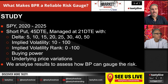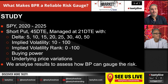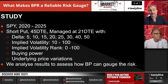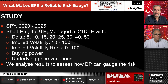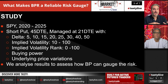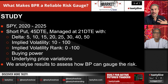The study we're looking at covers the last five years — SPY from 2020 to 2025. We're looking at short puts at 45 days to expiration, managed at 21 days till expiration. We're taking the undefined side out and just looking at short puts, with varying delta from 5 all the way up to 50. Implied volatility has ranged from 10 to 100 over these last five years.